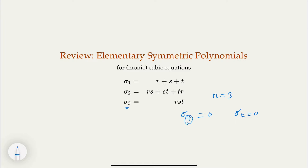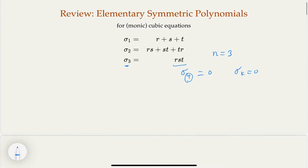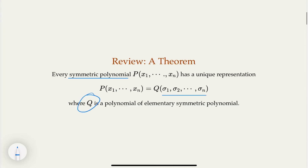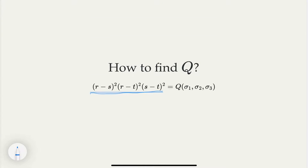Sigma 3 means: among three numbers, take three out of three and form a term — there's only one choice, RST. Sigma 2 is similar. We also reviewed the theorem that for any symmetrical polynomial, it can have a unique representation in terms of the sigma variables. The polynomial Q is what we try to find, and this discriminant polynomial is symmetric.